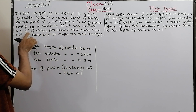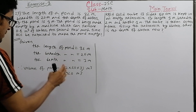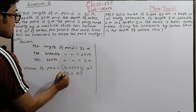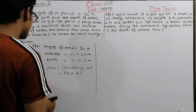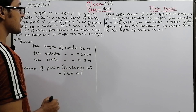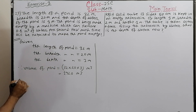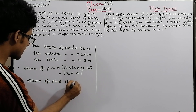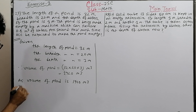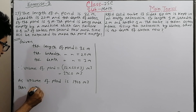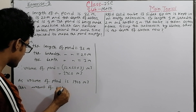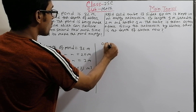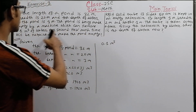The machine removes 0.1 cubic meters per second. The volume of the pond is 1920 cubic meters. So the amount of water in the pond is 1920 cubic meters. The machine can remove 0.1 cubic meters of water in one second.